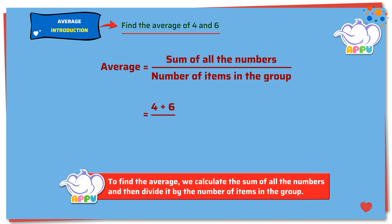Find the number of items. 1, 2. We have 2 items. 4 plus 6 divided by 2 equals 10 divided by 2 equals 5. The average of the given numbers is 5.